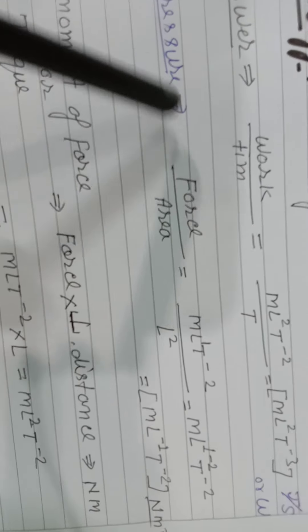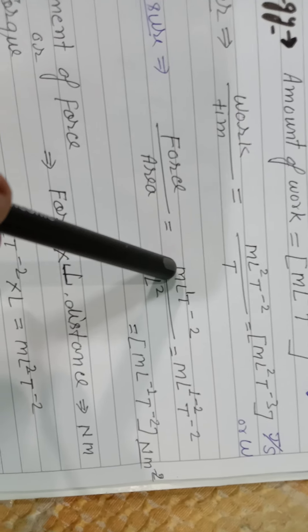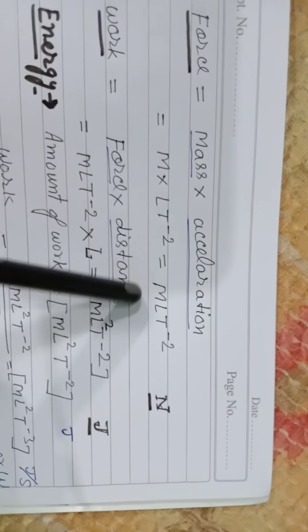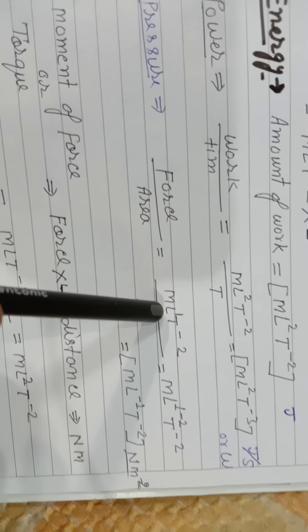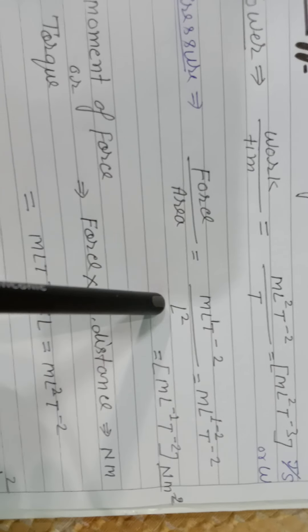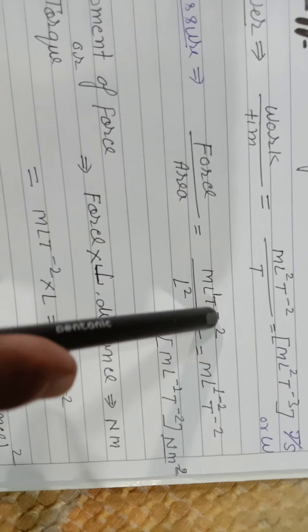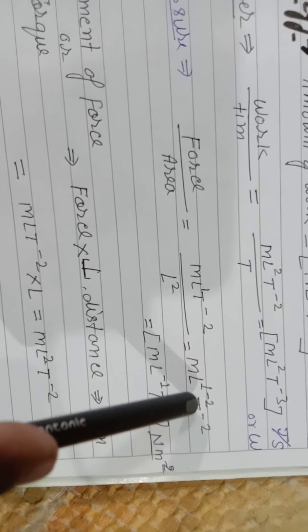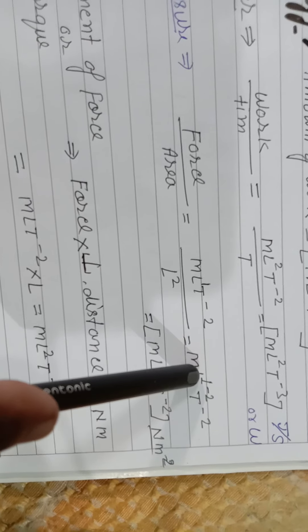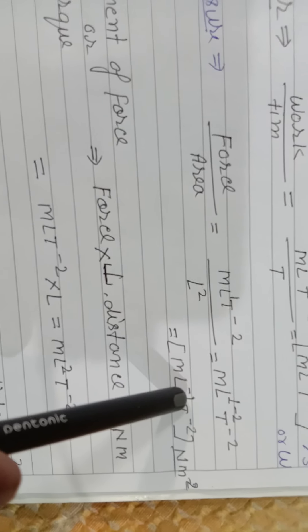Just like Pressure: Pressure equals Force upon Area. We write the dimension of Force as [MLT⁻²], and for Area it is [L²]. So Pressure = [MLT⁻²] / [L²] = [ML⁻¹T⁻²].